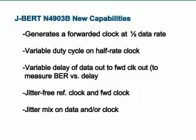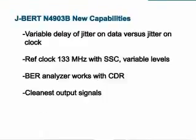The Jaybird allows you to generate half-rate clocks and you can vary the duty cycle on that half-rate clock. This allows you to generate stress conditions and to emulate closed eyes. You can add jitter not just on the data signal, but also on the clock signal. And you can even delay the jitter phase on the data signal versus the clock signal, helping you emulate stress conditions for your receiver using the forwarded clock architecture.